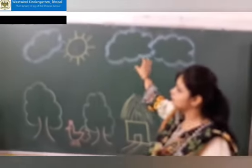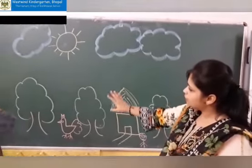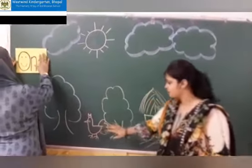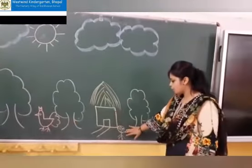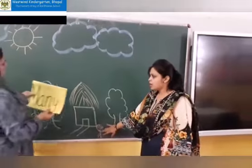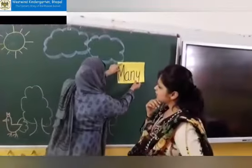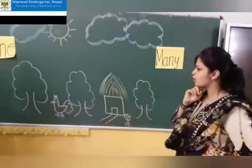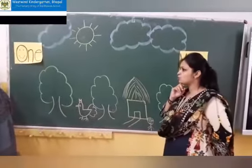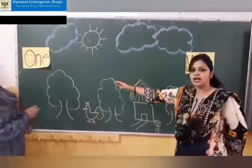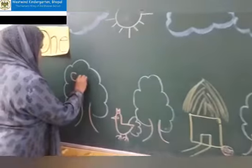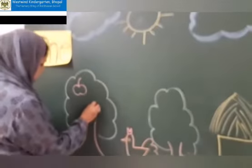Now I'm giving you time — just observe the picture carefully. We have sun, we have clouds, we have trees, we have hen, we have hut, a picture of a boy. The trees are looking a little blank, so we can draw apples. Draw two apples on the tree so it looks nicer. Ma'am is drawing two apples.